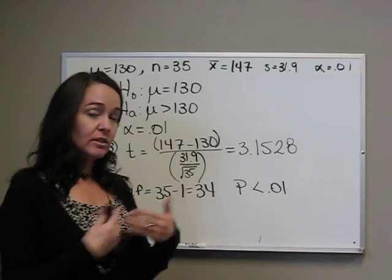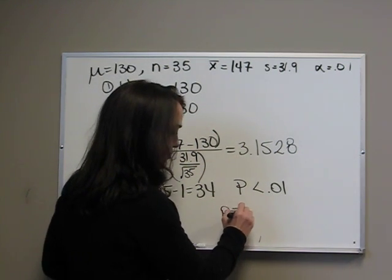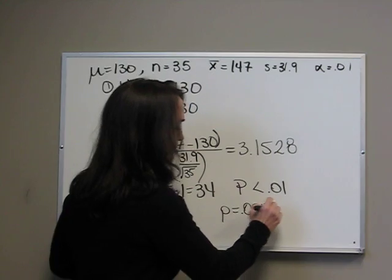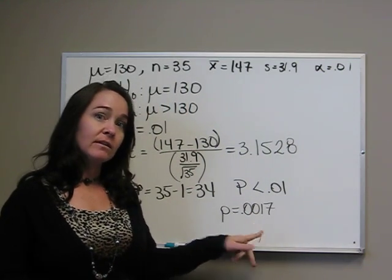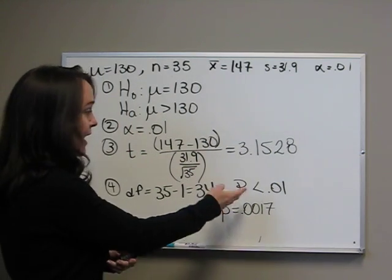Now, if you have a calculator that actually finds the p-value, you'll see that the p-value is actually .0017. That's if you have a calculator that calculates the p-value. So, we have our p-value.